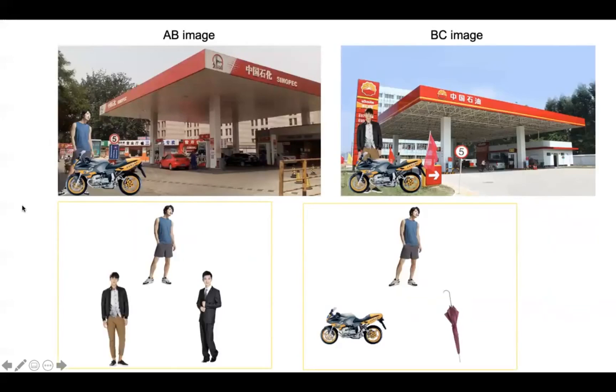So in our association test, we tested both the associative inference, that is, which person is associated with this cue person because of the common object. And we also tested the direct association between a human being and an object. Like in this case, this man is paired with this motorcycle.